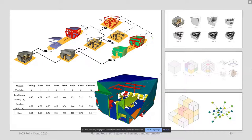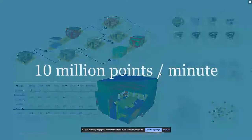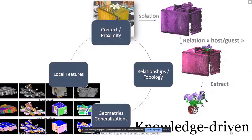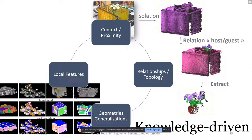We currently process around 10 million points per minute on CPU — no GPUs — so performance would jump with GPU usage. The features are mainly derived from principal component analysis, but what really helps are context and proximity features and relationship or topology features, such as host-guest relationships based on geometrical generalization of the underlying clusters. All of this is knowledge-driven.